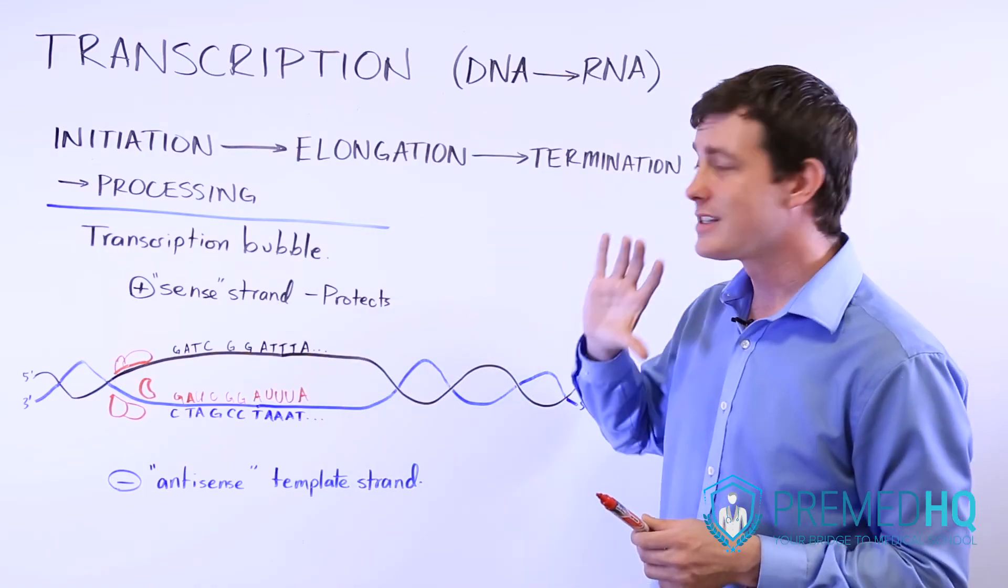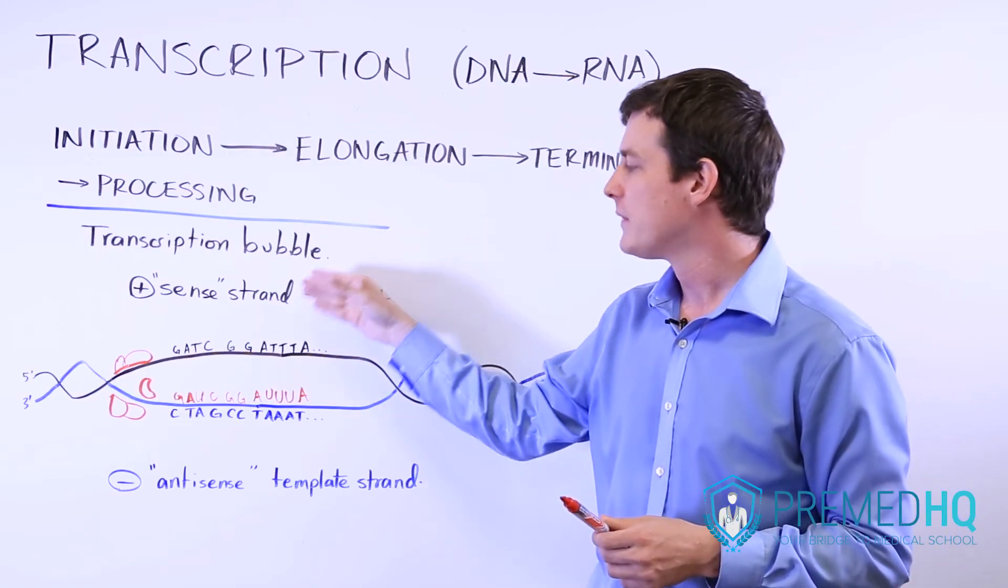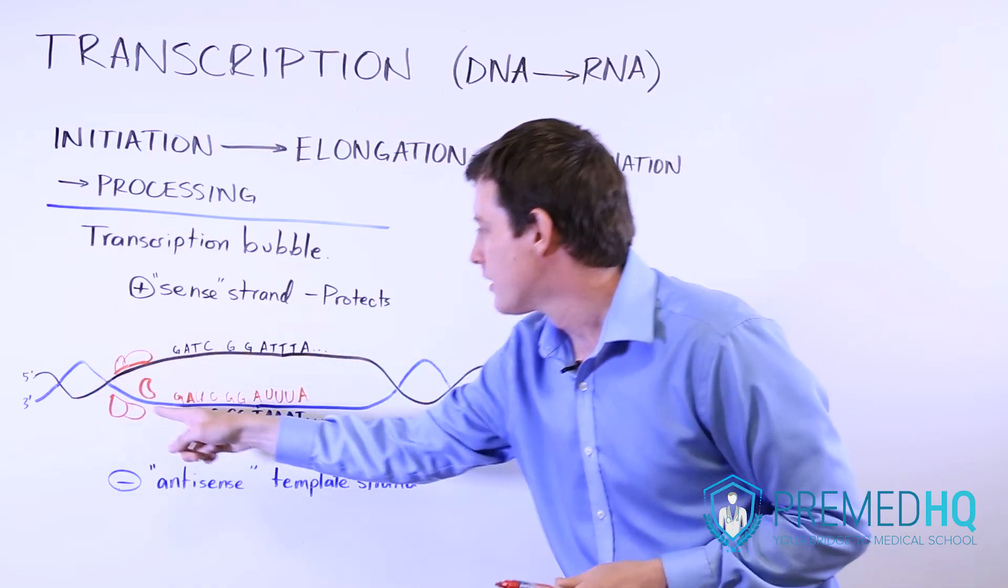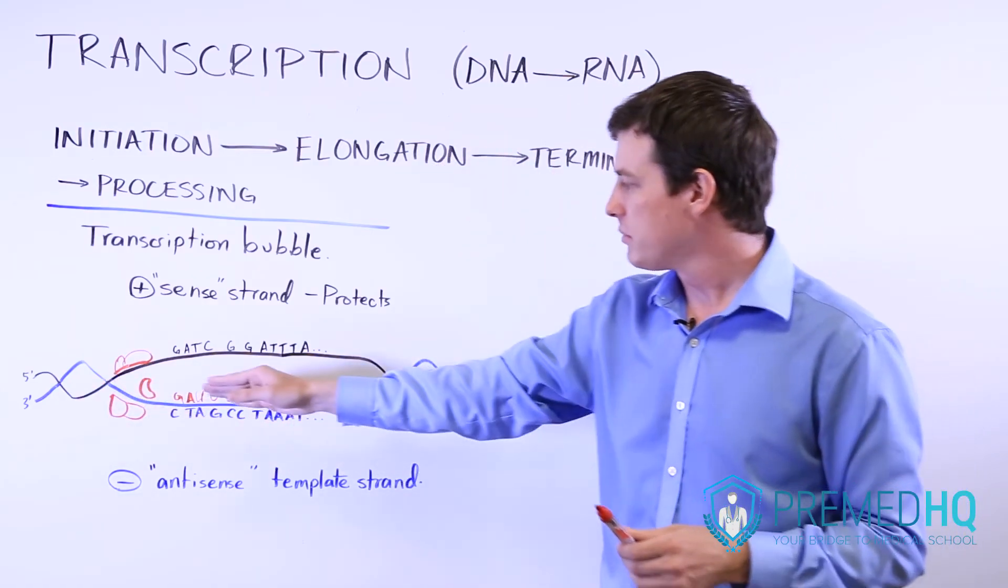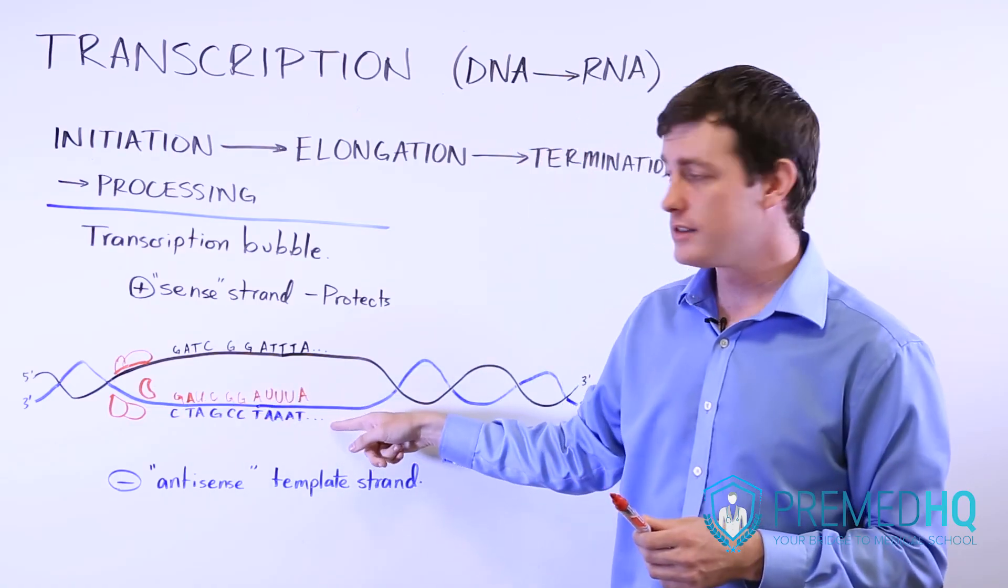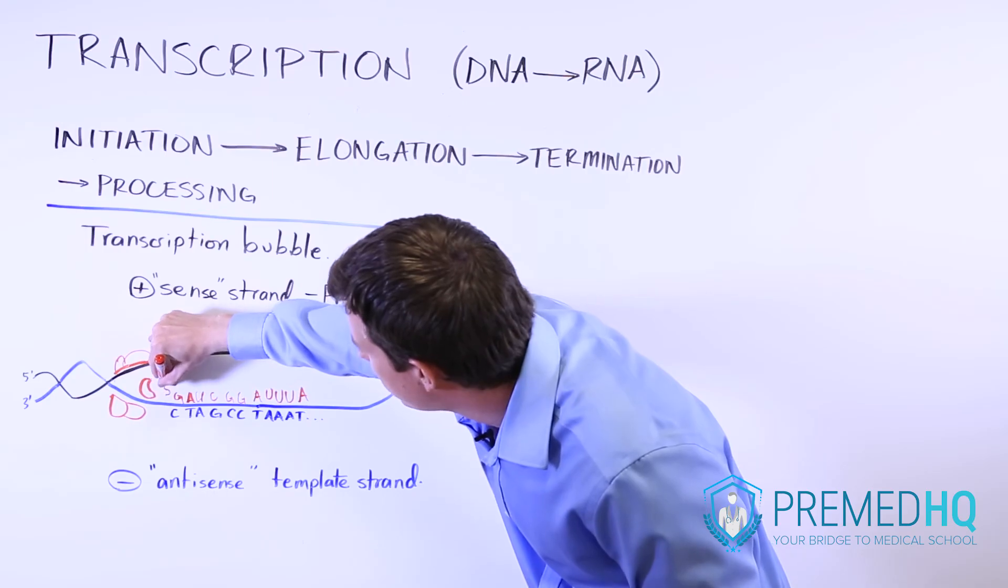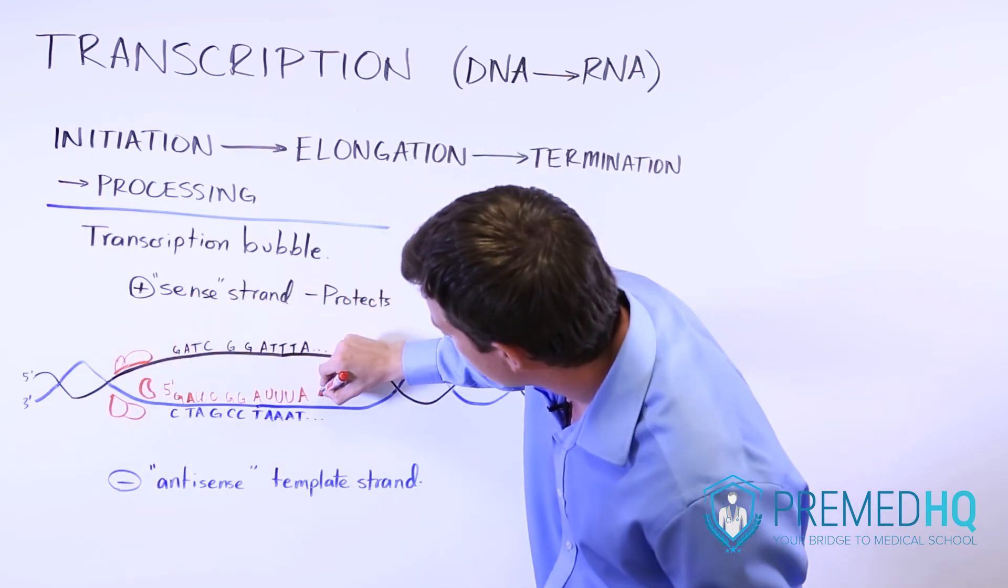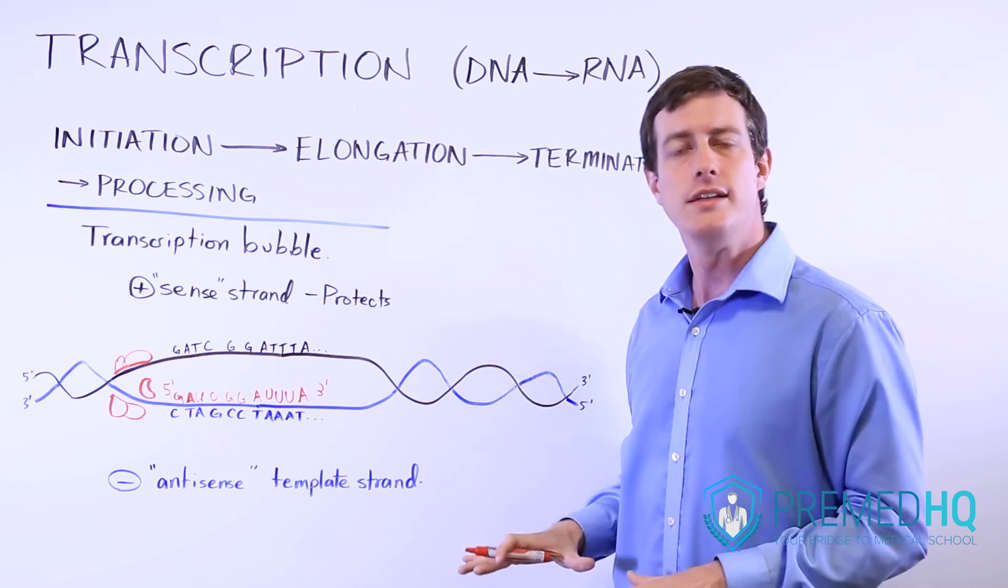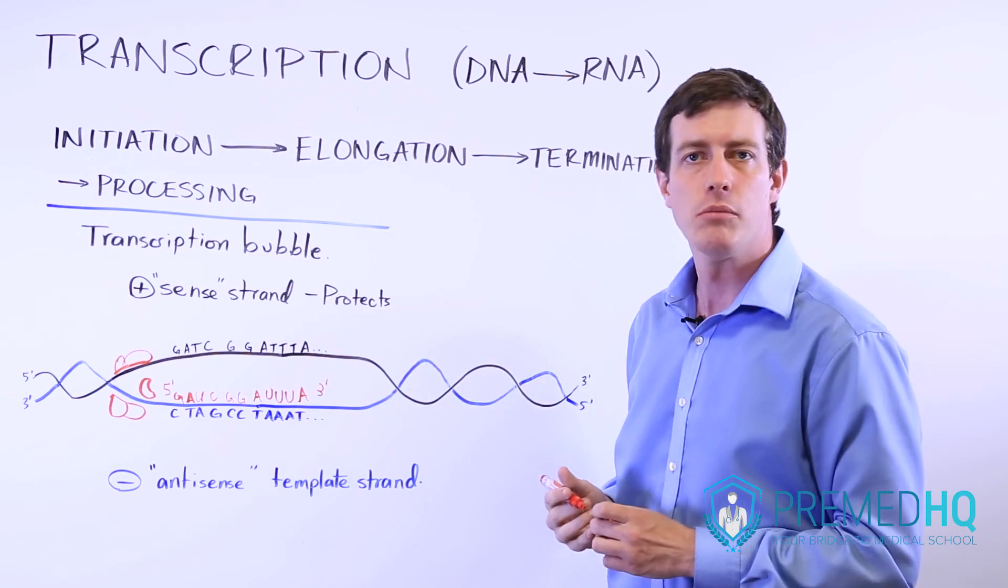So the elongation process is not too complicated. What you should know is the transcription bubble, the two different strands, and that it reads three to five along the template strand. It reads from the three end of the template strand to the five end, but it writes down a new one that has a five prime end there and a three prime end there. So once again read up and write down is the motif that you see when polymerases are performing their function.